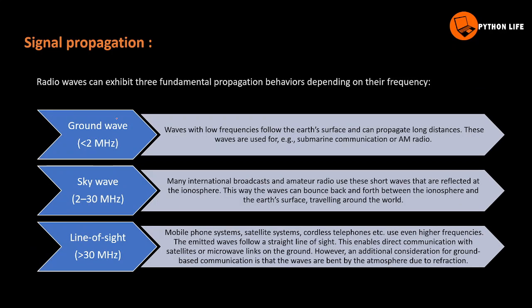Radio waves can exhibit three fundamental propagation behaviors depending on their frequency: ground wave, sky wave, and line of sight. Ground waves have low frequency, follow the Earth's surface, and can propagate long distances — less than 2 MHz. These waves are used in submarine communication or AM radio.